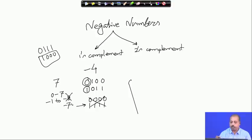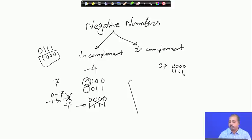However, there is a problem with the representation of 0. In a 4-bit number system, 0 is represented as 0 0 0 0. If I complement all these bits, it becomes 1 1 1 1, which should represent minus 0. This is a problem because now you have two representations of the same number, since plus 0 and minus 0 are meaningless as distinct values. As far as the one's complement representation is concerned, you have two different representations for zero, and that makes it difficult.